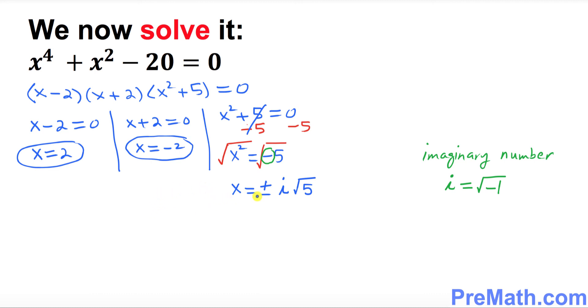So thus, if you split them up, so this is gonna give you x equal to one of the with a positive sign i square root of 5. One of the solutions with imaginary number, the other one is x equal to with a negative sign negative i square root of 5, another solution with imaginary number.